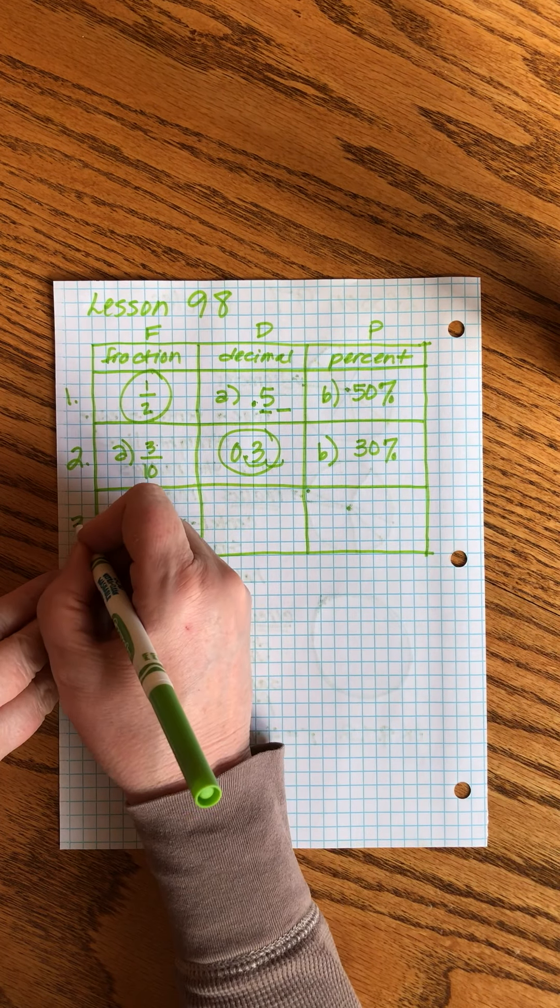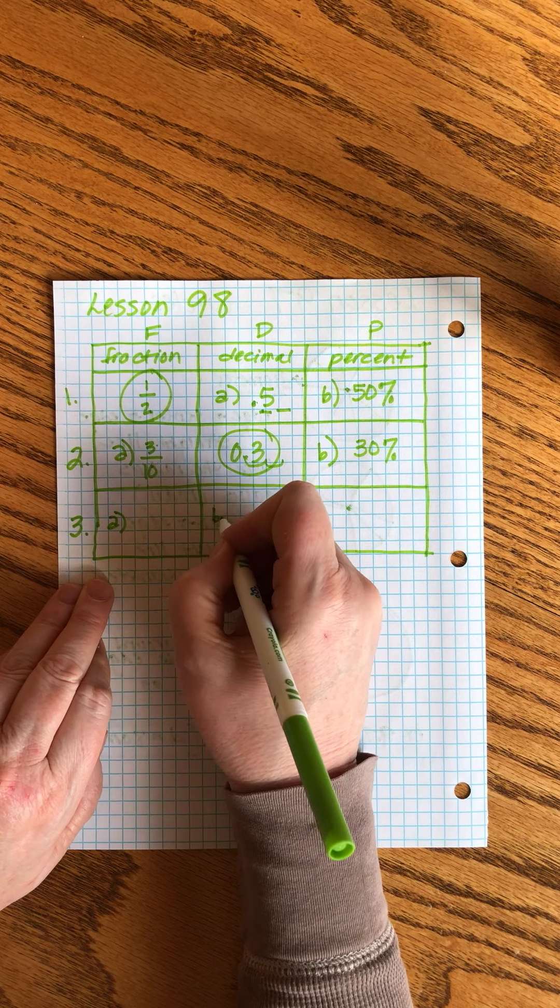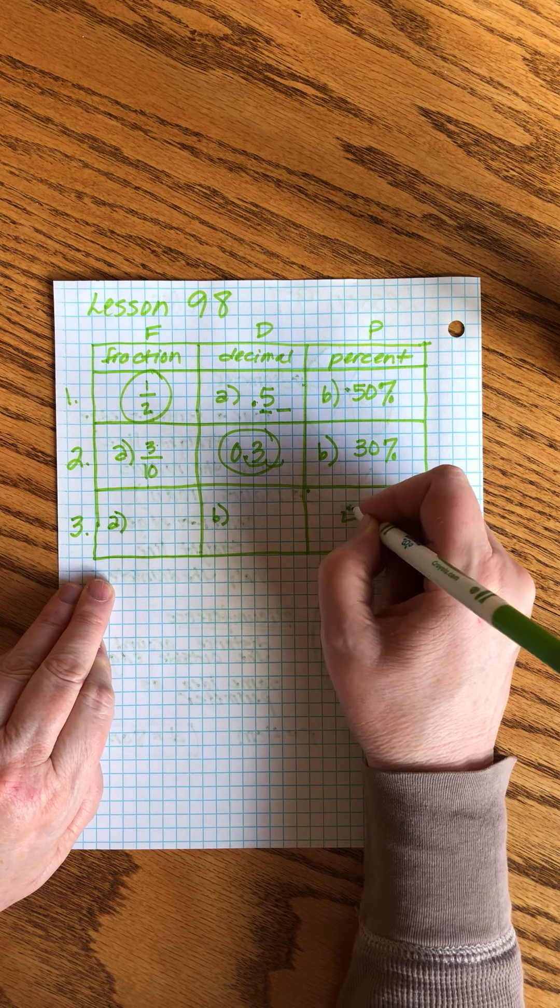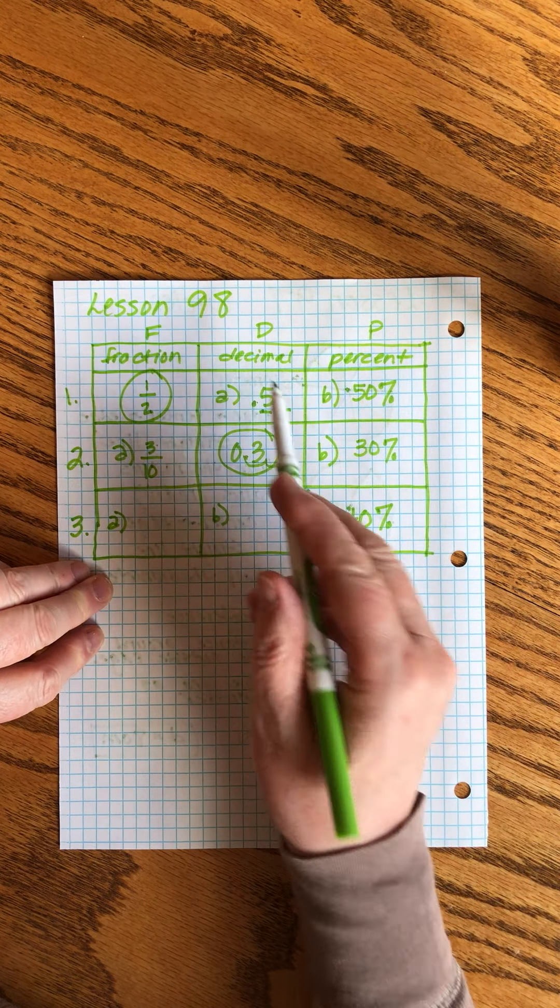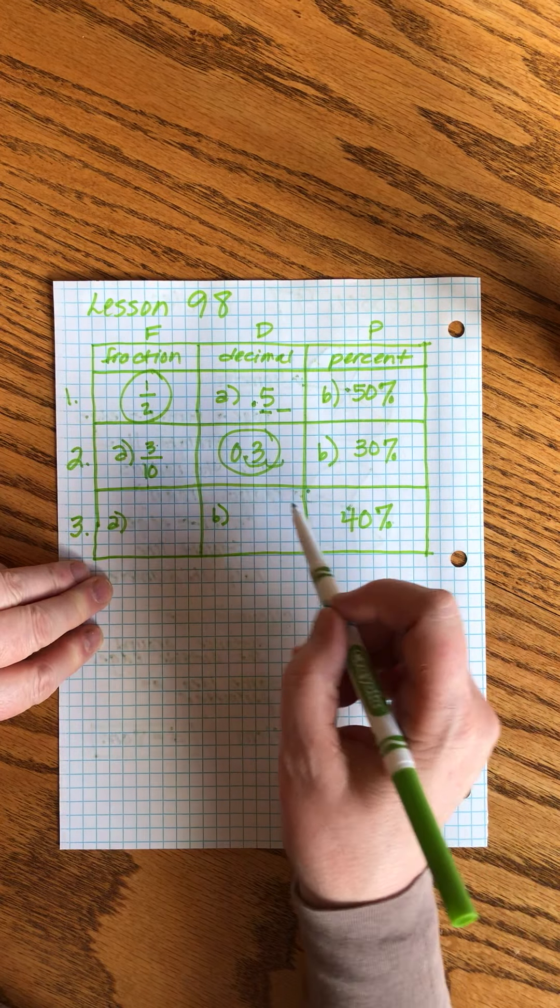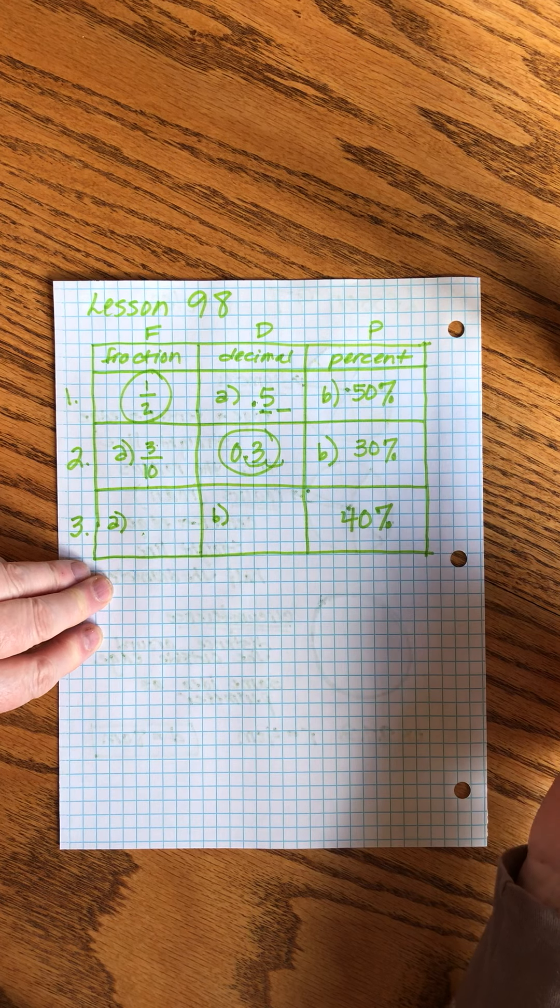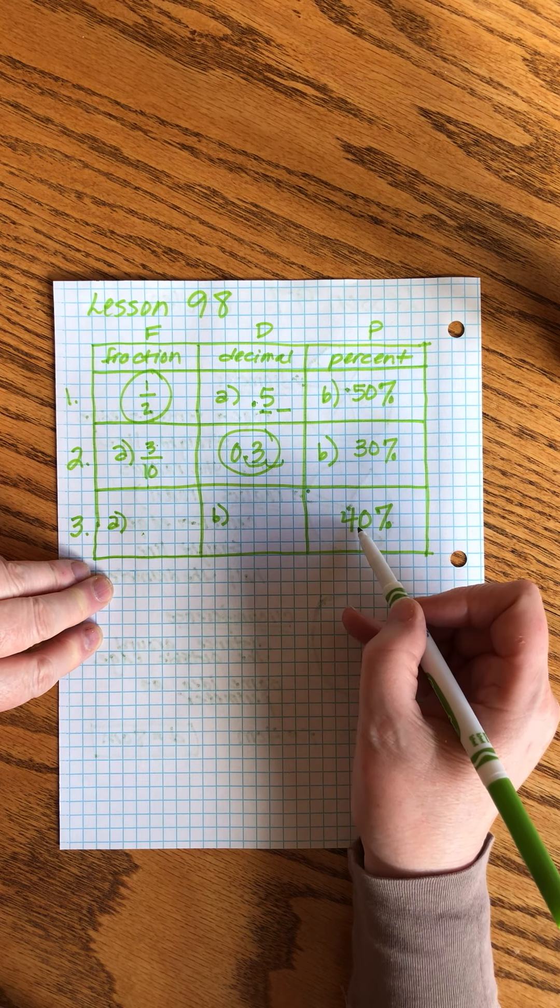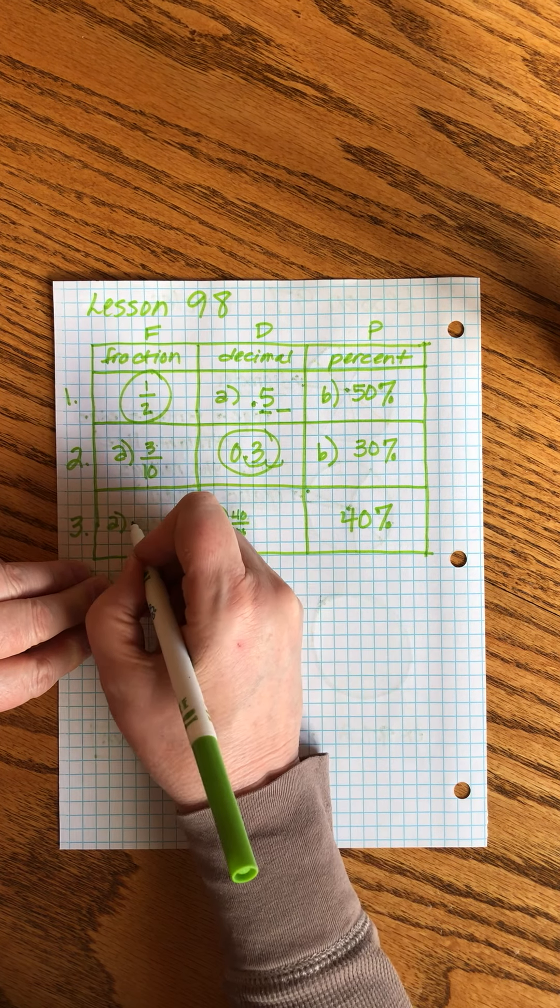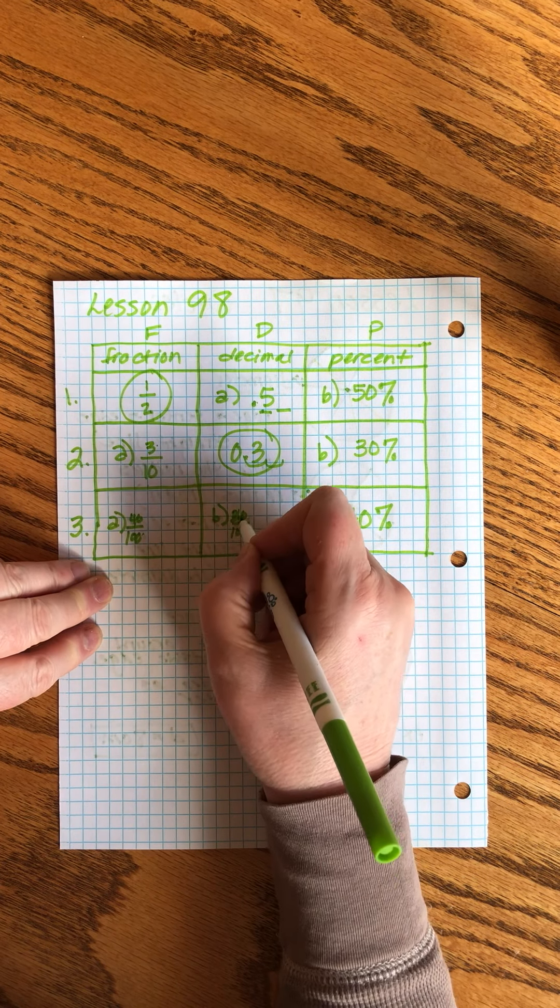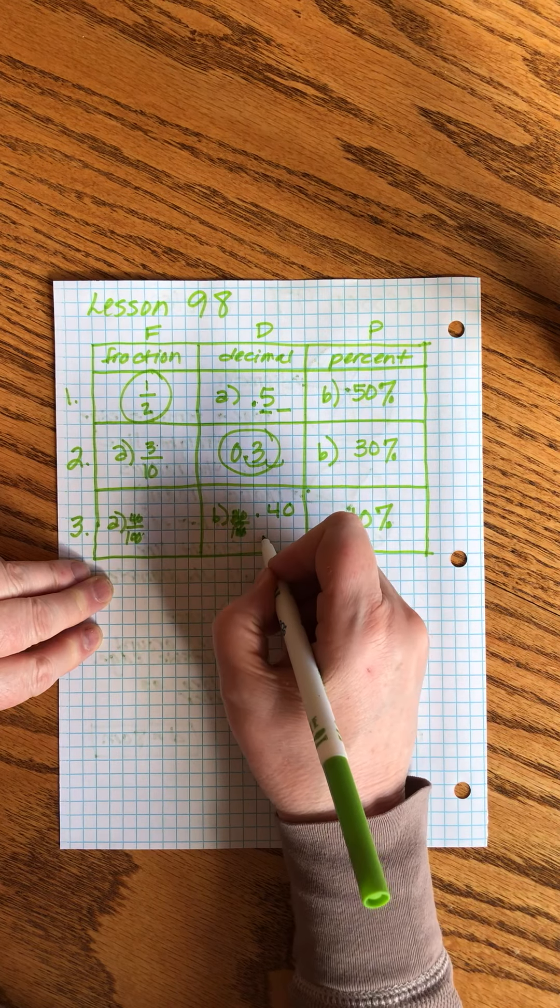Row three, okay I look at my chart. This time he's giving us the percent. All right we can deal with that. To go back to the decimal, you can do these in any order you want, you can do the fraction first, you can do the decimal first.